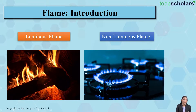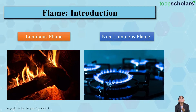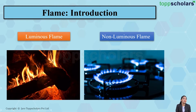A luminous flame is a yellow colored flame, whereas a non-luminous flame is a clean blue colored flame due to complete combustion. Luminous flame contains unburned particles, while non-luminous flame undergoes complete combustion. Luminous flame has a much lower temperature compared to the non-luminous flame, which has a high temperature.